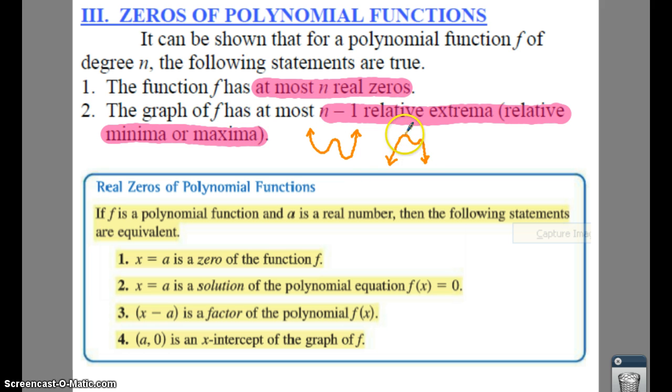So that means you're going to have 2 max and 1 min, or you'd have 2 min and 1 max. This will help you a little bit when you are graphing.